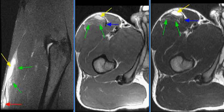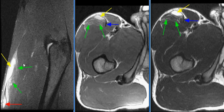A 25-year-old male presenting with right hip and thigh pain. An MRI exam of the right thigh was performed. There is T2 hyperintense edema in the anterior aspect of the rectus femoris muscle, compatible with a grade 2 strain.